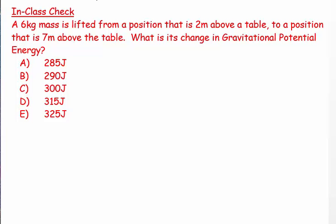Welcome. This question says a six kilogram mass is lifted from a position that is two meters above a table to a position that is seven meters above the table. What is its change in gravitational potential energy?